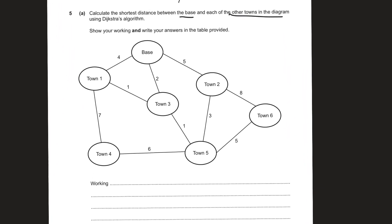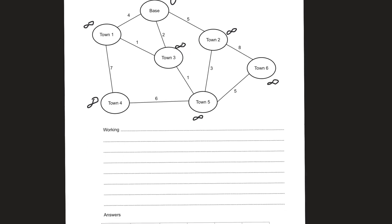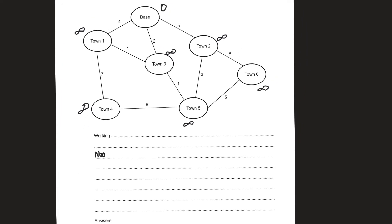Let's get started. First we give the value of zero to the base, and the rest would have the value of infinity. Once we have initialized those values, for our own reference let's put down a table we'll call 'nodes and values,' and a list which would be the list of processed nodes. In the nodes column we'll put down base with a value of zero, and towns one through six each with a value of infinity at the moment.